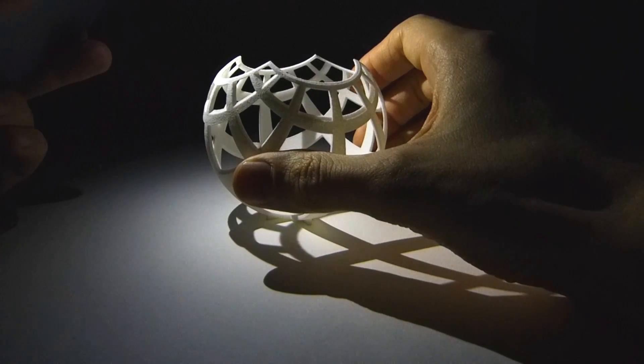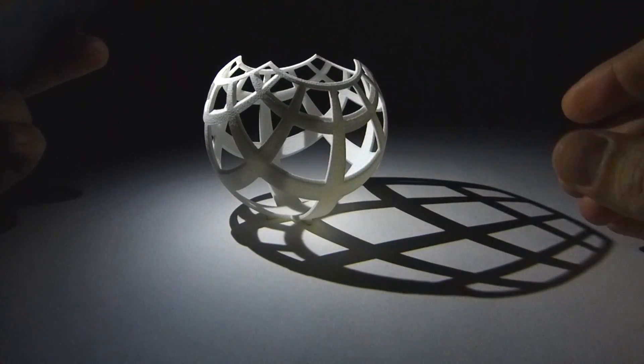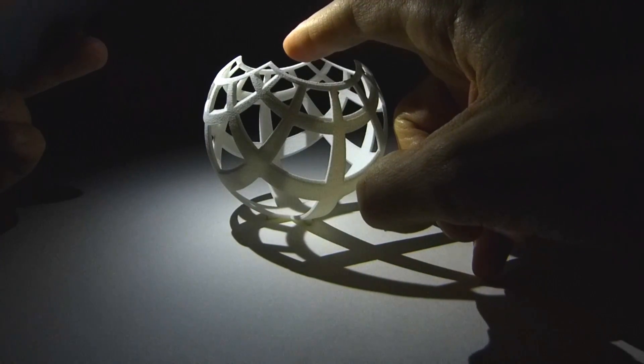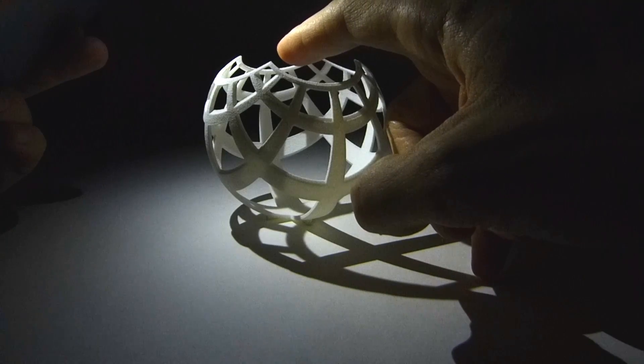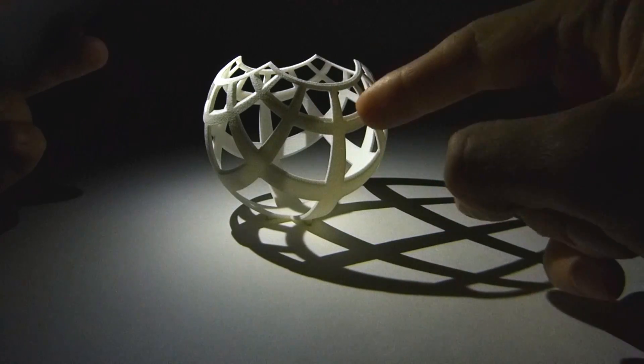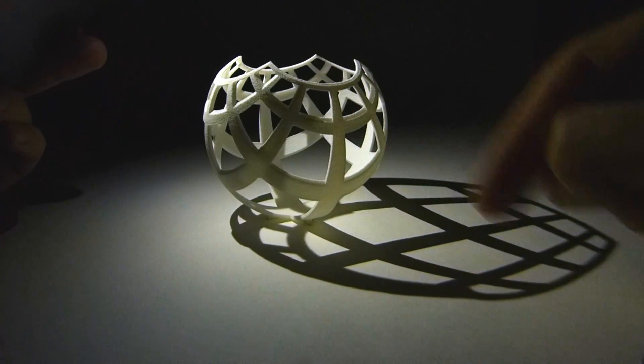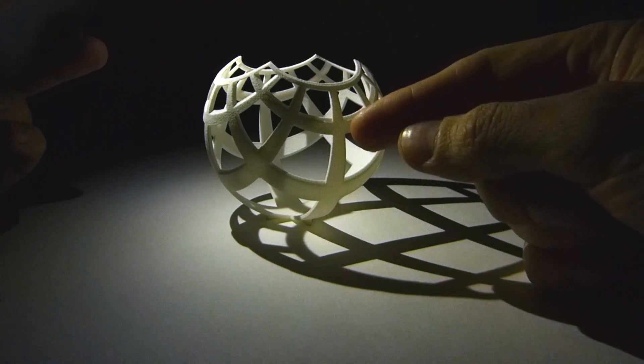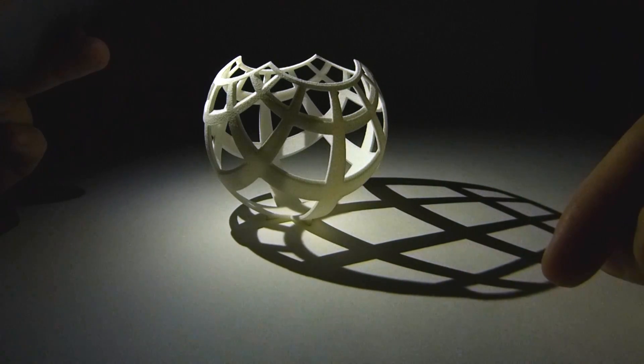So Stereographic Projection is a map from the sphere to the plane, and the way that it works is you look at the north pole of the sphere and you draw straight lines from the north pole down onto the plane. Each such line hits the sphere once and hits the plane once, and so the map from the sphere to the plane is where does the line hit the sphere that maps to where the line hits the plane.